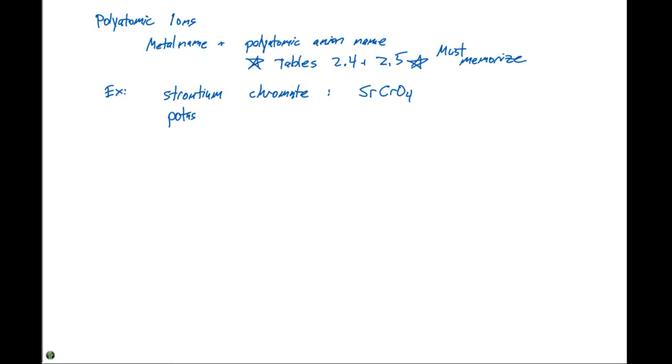If we have potassium nitrate. Nitrate is NO3 with a minus 1 charge. Potassium's in group 1A, so it's gonna have a plus 1 charge. So that formula is KNO3.